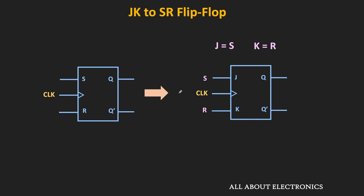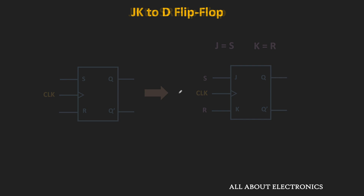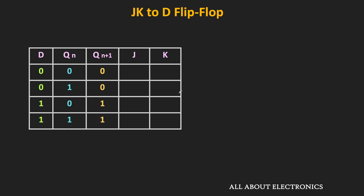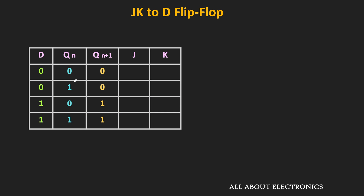Now let us see how to convert the JK flip-flop into the D flip-flop. Since the D flip-flop is our required flip-flop, let us write down its truth table. For the D flip-flop, the output is the same as the D input: when D is 0, the output is 0, and when D is 1, the output is 1. To achieve all these output transitions, we find the required J and K inputs using the excitation table.